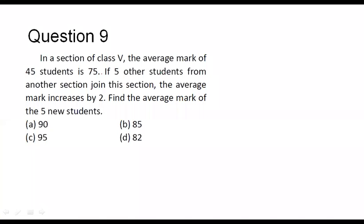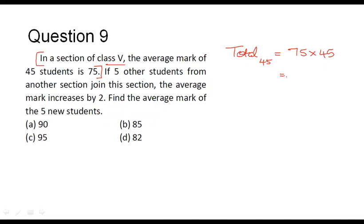Let us split this question into two parts. In the first part, it is given that in a section of class 5, the average mark of 45 students is 75. So the total marks obtained by these 45 students corresponds to average into number of observations, that is 75 into 45, which equals 3,375. This is the total marks obtained by these 45 students.